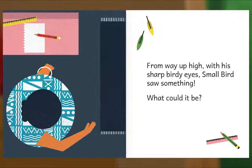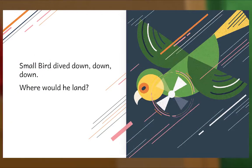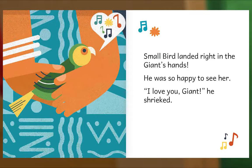From way up high, with his sharp birdy eyes, Small Bird saw something! What could it be? Small Bird dived down, down, down! Where would he land? Small Bird landed right in the giant's hands — he was so happy to see her!